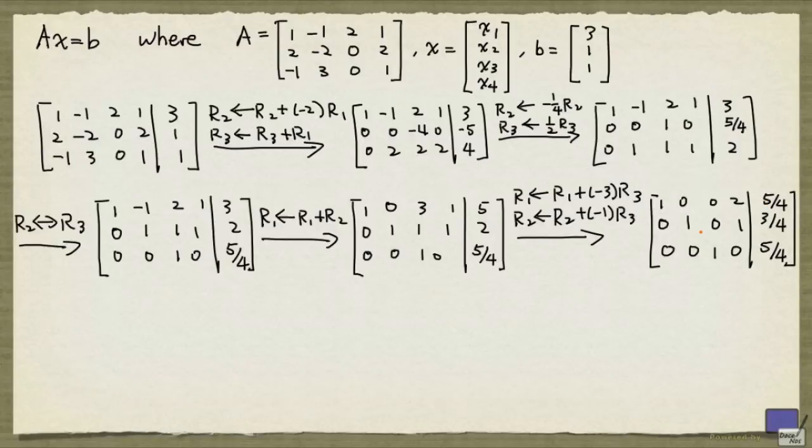The variables corresponding to the first three columns correspond to the leading ones. So if you just want one solution to the system, you can set x4 to 0, and set x1, x2, and x3 to 5 quarters, 3 quarters, and 5 quarters, respectively.